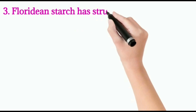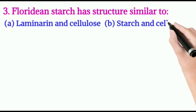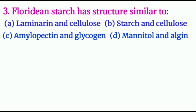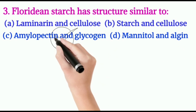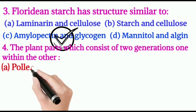Question number three: Floridian starch has a structure similar to — A: laminarin and cellulose, B: starch and cellulose, C: amylopectin and glycogen, D: mannitol and algin. The right option is C, amylopectin and glycogen. Others do not share this structure; for example, cellulose does not have the Floridian starch structure.